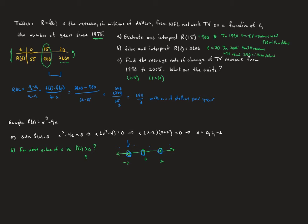I'll pick a representative from the far left region, like negative 3. Using the factored form, negative 3 is negative, negative 3 minus 2 is negative, and negative 3 plus 2 is negative. A negative times negative times negative is negative — not greater than 0 — so no solutions left of negative 2. Picking negative 1 between negative 2 and 0: negative 1 is negative, negative 1 minus 2 is negative, but negative 1 plus 2 is positive. Negative times negative times positive is positive, which is greater than 0, so everything in that region is a solution.